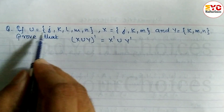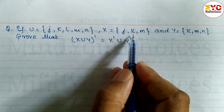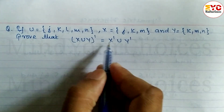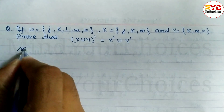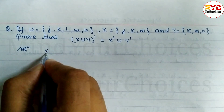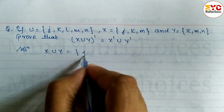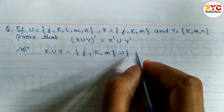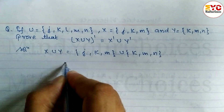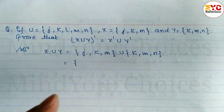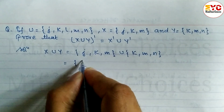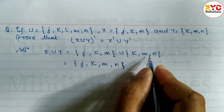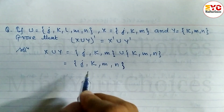Now if U is equal to {J, K, L, M, N}, X is equal to {J, K, M}, and Y is equal to {K, M, N}, we need to prove that X union Y complement is equal to X complement union Y complement. First, let's find X union Y. Set X is {J, K, M} union set Y is {K, M, N}. We take all elements from both sets: J, K, M, N — do not repeat M since it appears in both sets.